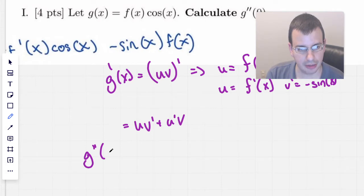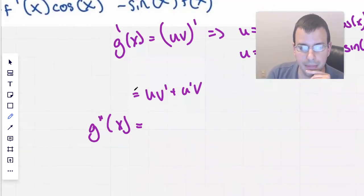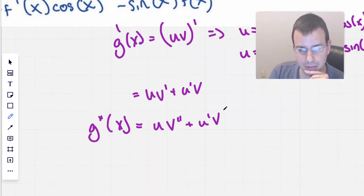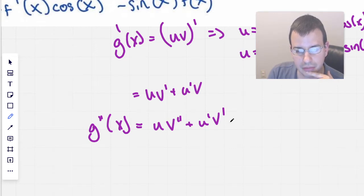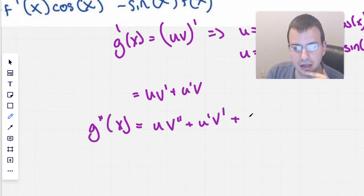So g double prime of x will be, now we're going to do the same thing. We're going to do uv double prime plus u prime v prime. Does that seem reasonable? So first times uv prime, yep. I'm good with that. Now we need to add the second term. So it'll be uv double prime plus u double prime v.